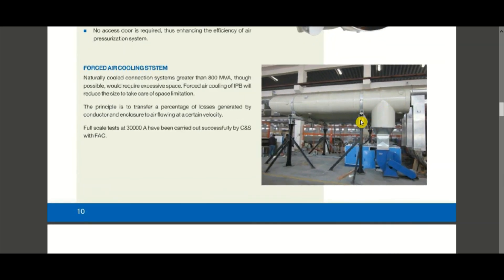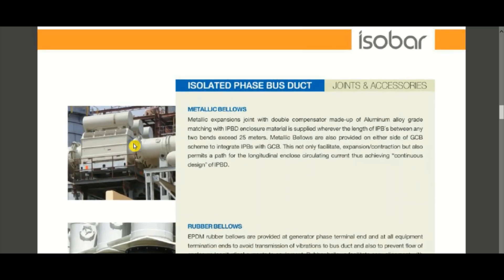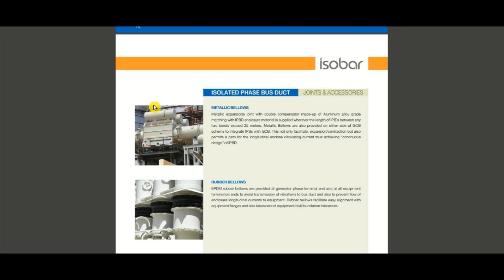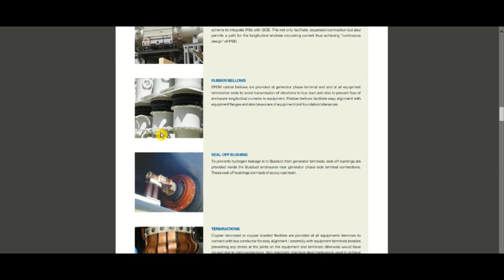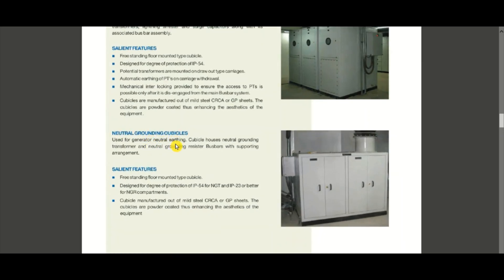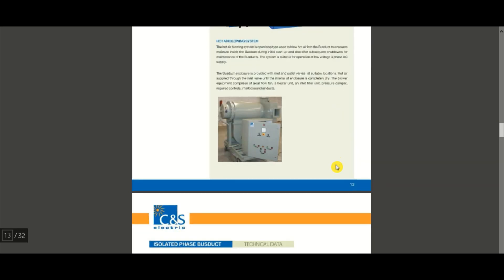This shows a typical IPBD connection layout. There is a neutral grounding cubicle (NGR) for the generator neutral grounding connection. Between the generator and generator transformer, a generator circuit breaker (GCB) is installed if the scheme is a GCB scheme. For a non-GCB scheme, the generator circuit breaker is absent and a station transformer provides plant start-up power from the grid. These are some typical IPBD accessories and connections.